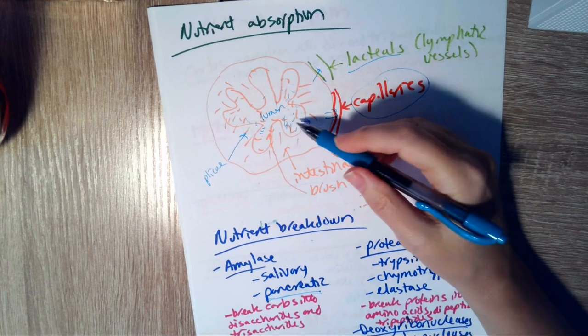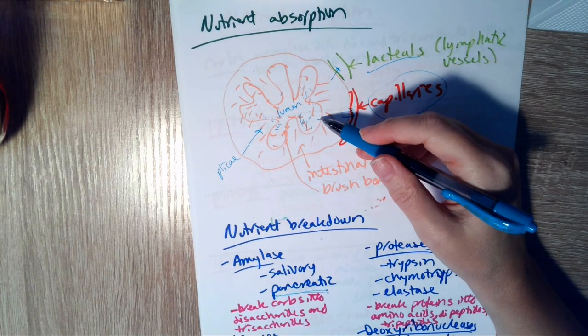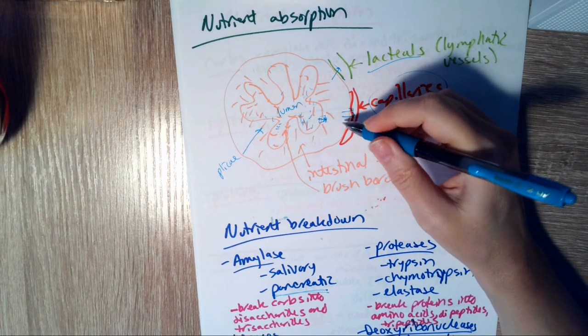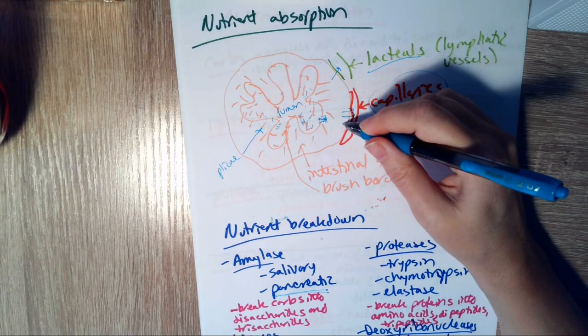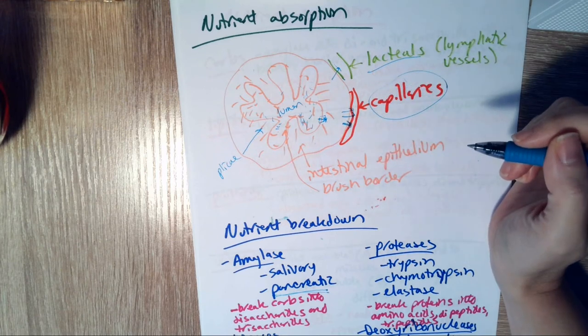They're going to be absorbed using co-transport with sodium. So to get into the cells, you essentially hook a monosaccharide together with a sodium, and into the cells they go together. Then it would just be a matter of simple diffusion to get out into the capillary for that monosaccharide.